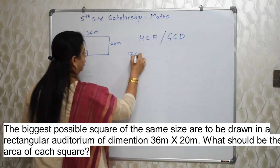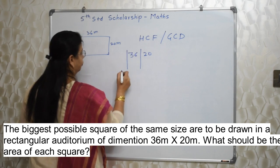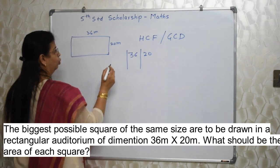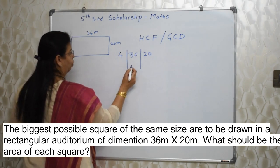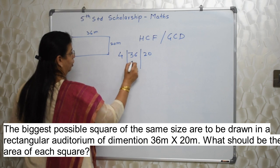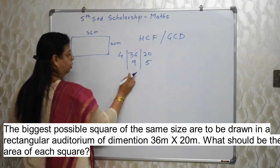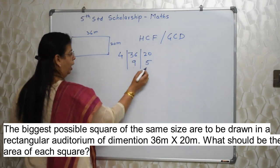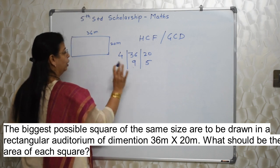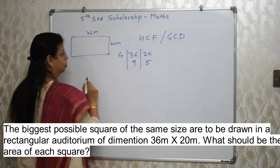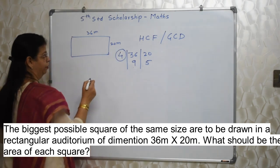So let's do it — 36 and 20. How to find out the HCF? Find out the common factor: 4. So 9s and 5s do not have any factor common, so we cannot take out anything common now. So 4 is the HCF.